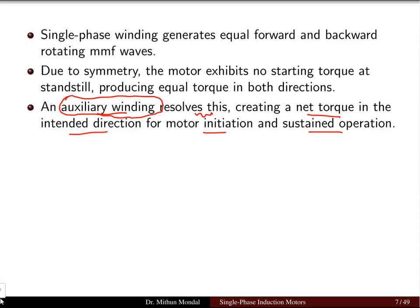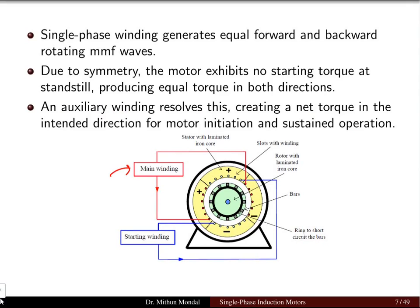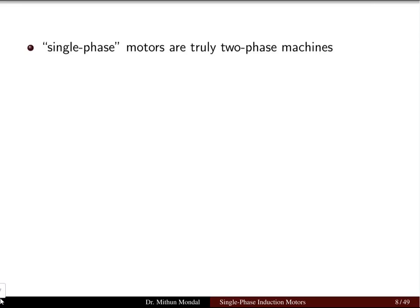An auxiliary winding is required to resolve this problem, creating a net torque in the intended direction for motor initiation and sustained operation. At starting, the auxiliary winding provides starting torque; once sufficient speed is gathered, sustained operation continues with the starting winding disconnected, leaving only the main winding. Although called a single-phase motor, it effectively operates as a two-phase machine because both main and auxiliary windings produce their own flux.